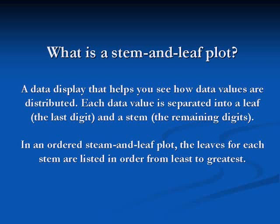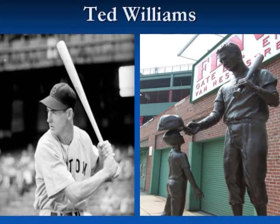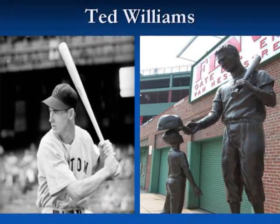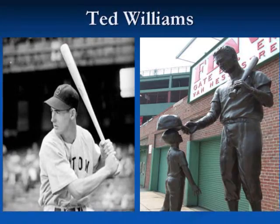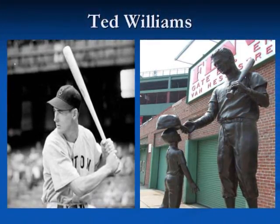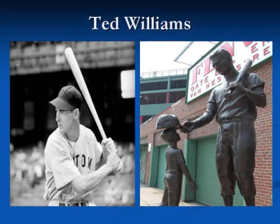In an ordered stem and leaf plot, the leaves for each stem are listed in order from least to greatest. To help you develop a better understanding of stem and leaf plots, I want to show you a stem and leaf plot that I built all about Ted Williams.